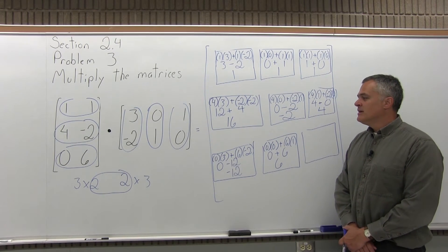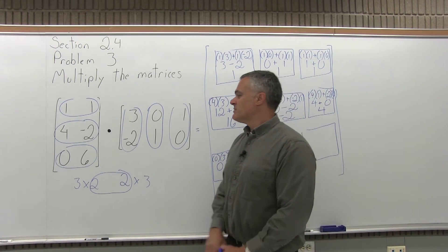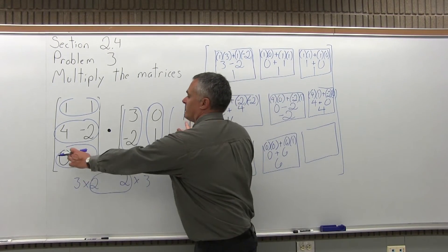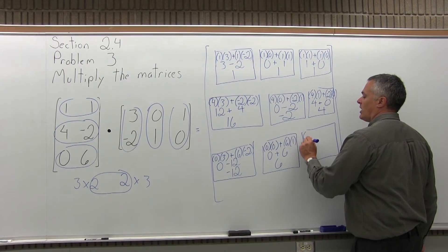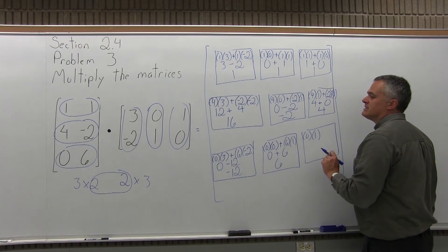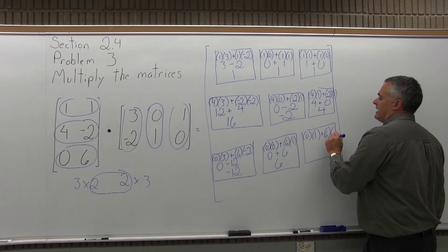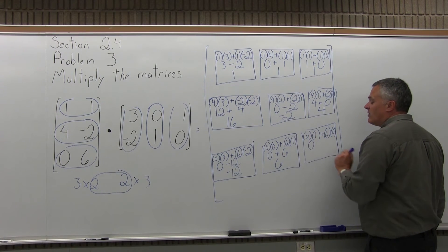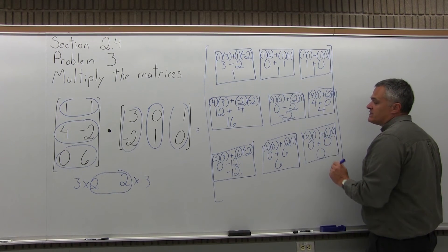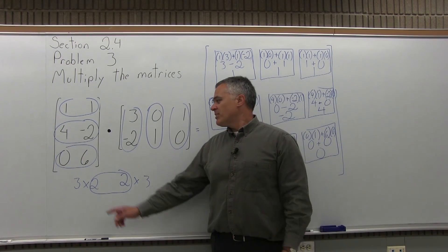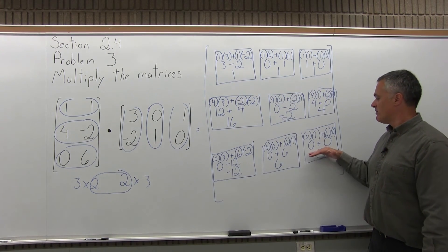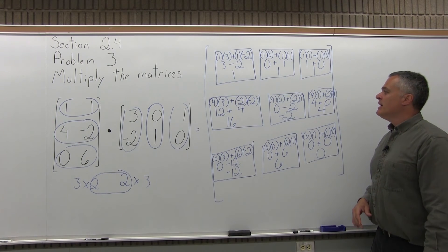One last box to fill in. I multiply the bottom row, 0, 6, times the last column, 1, 0, of the second matrix. First times first is 0 times 1, plus second times second is 6 times 0. So we have 0 plus 0, which is 0. We got that by multiplying the bottom row of the first matrix times the last column of the second, and the answer goes in the bottom row and last column.